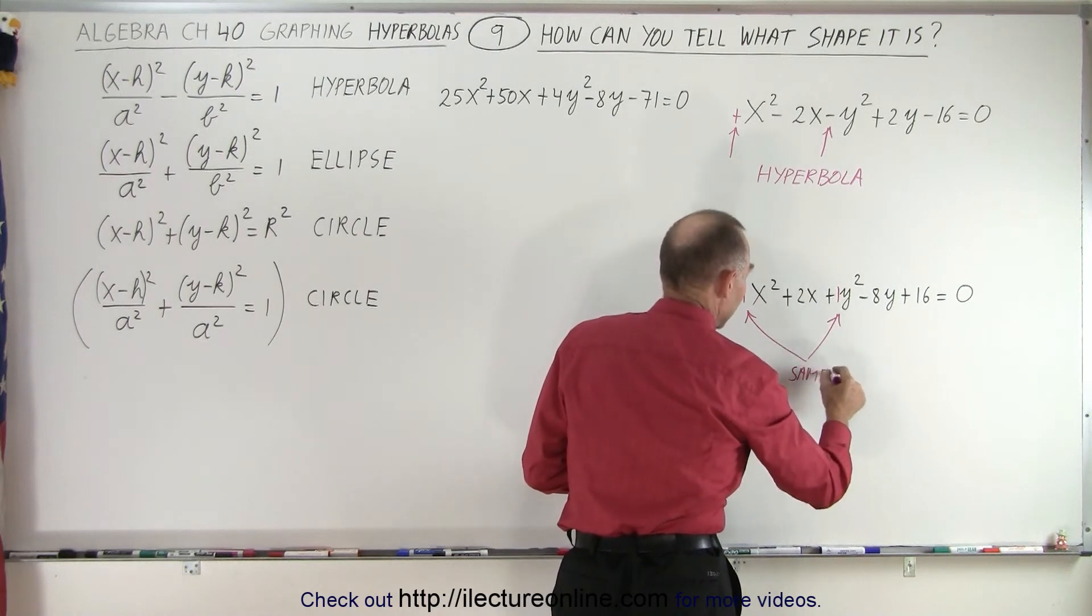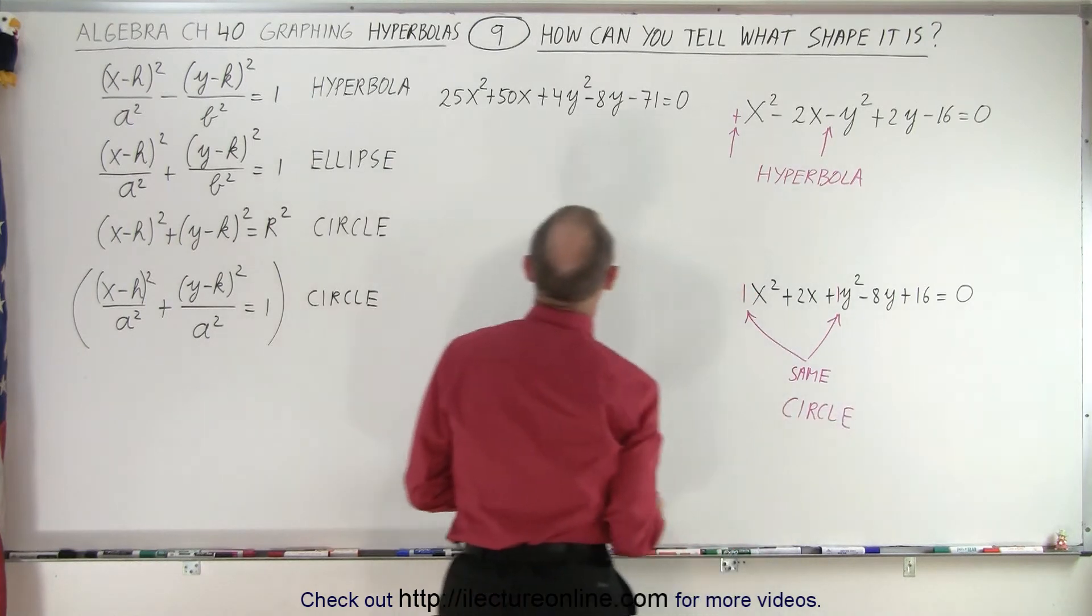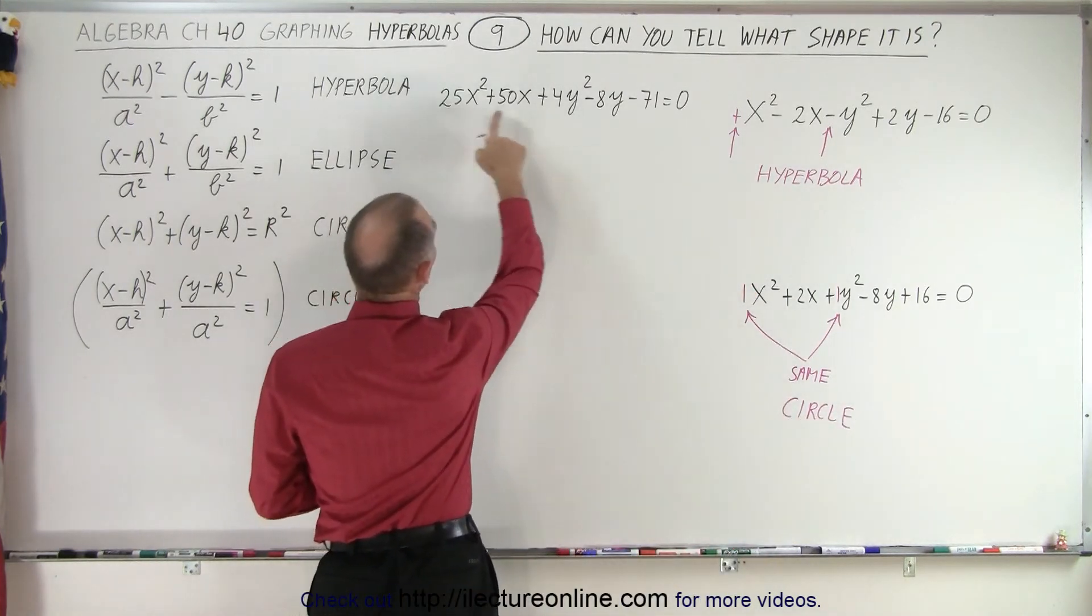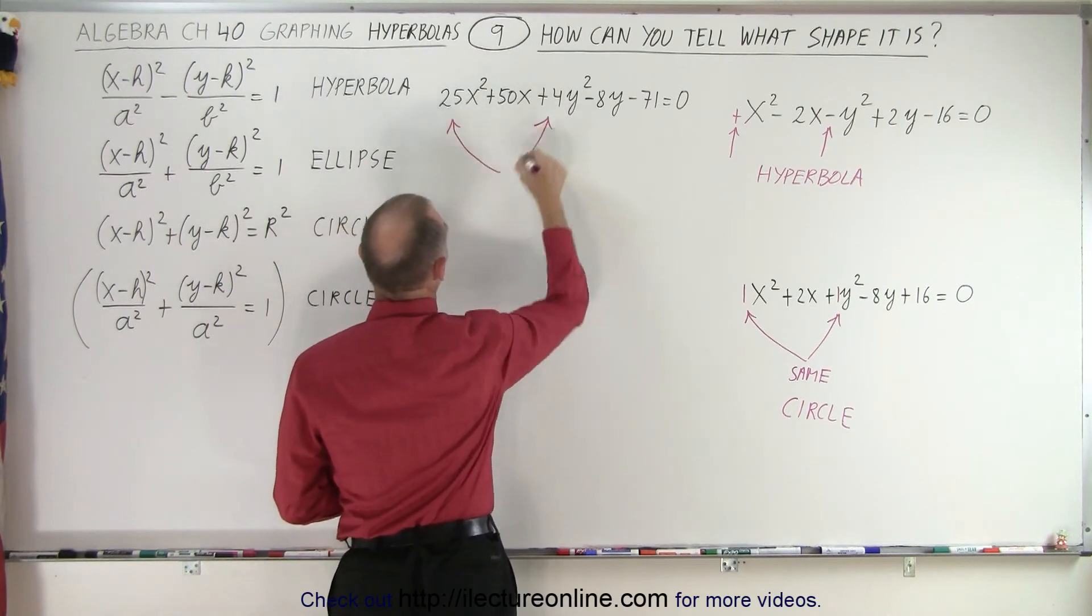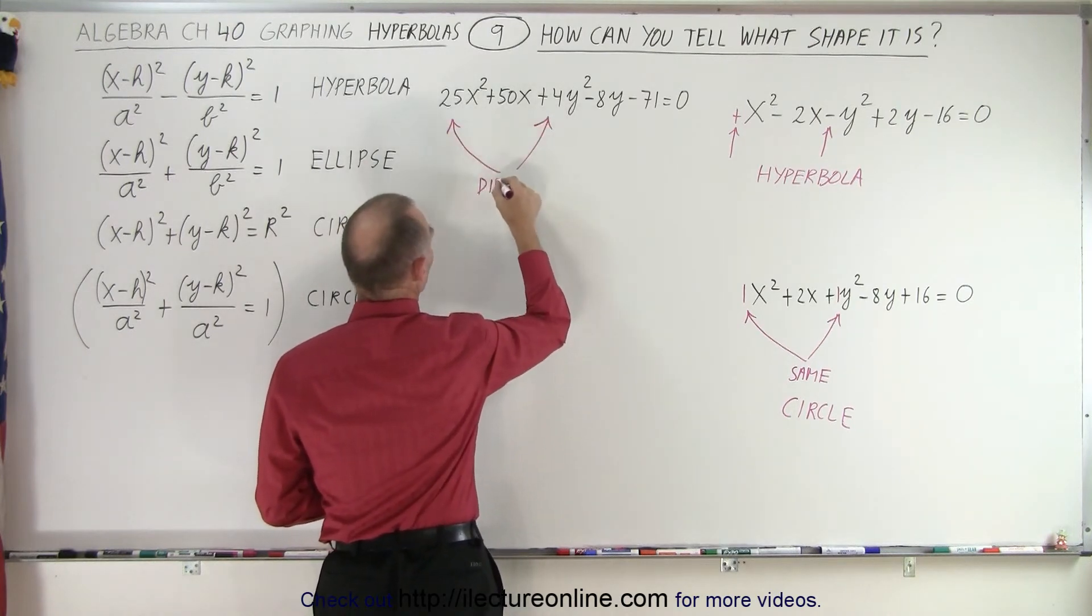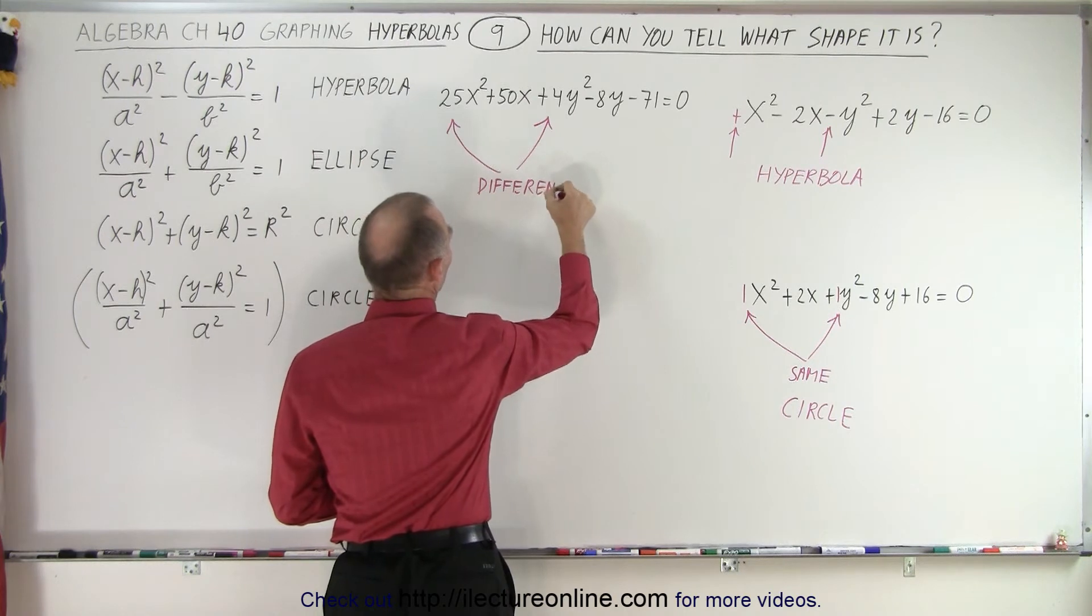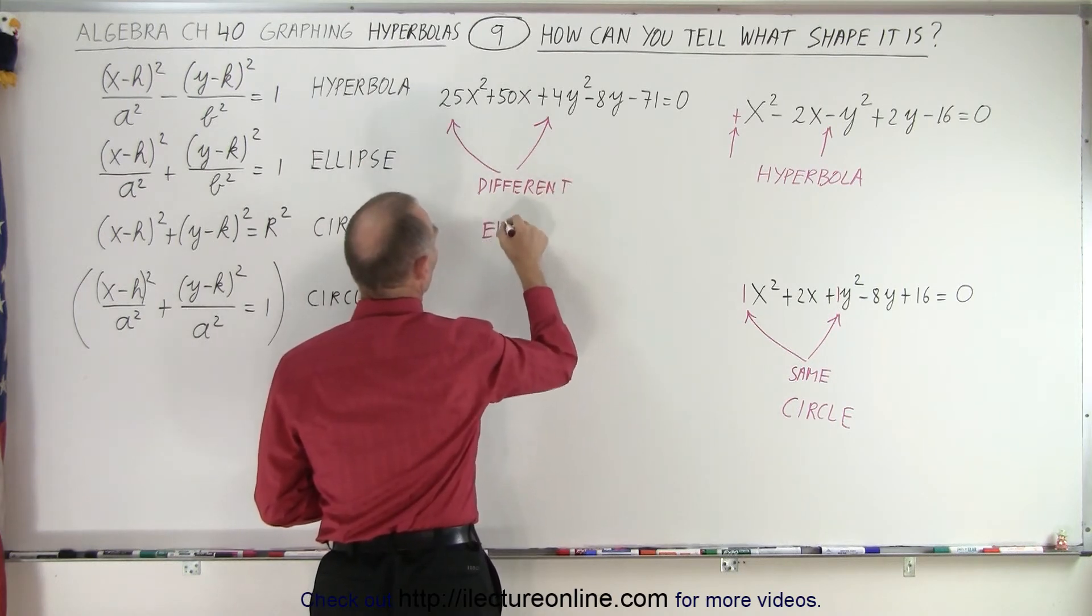Here they're both positive, but notice that those numbers in front of the x-square term and the y-square term are different. If they're different, then you're dealing with an ellipse.